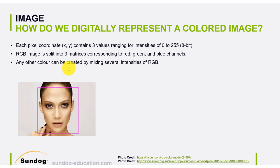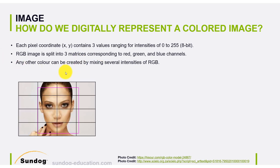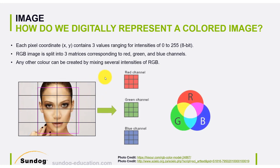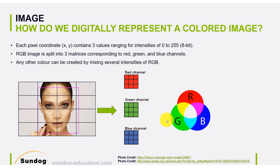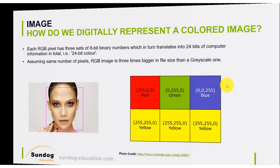The RGB image is split into three matrices corresponding to red, green, and blue. By mixing these three colors you can produce any color. For example, if we divide the image into channels — pure red, pure green, pure blue — and mix them, we get new colors. Mixing red and green gives yellow; mixing blue and red gives pink, and so on. That's how we produce all the different colors our eyes can see.